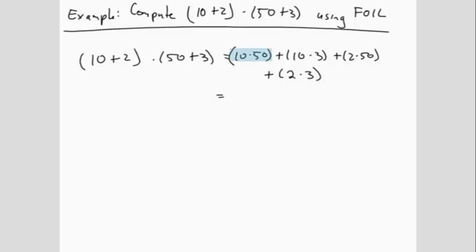10 times 50 is 500, plus 10 times 3 is 30, plus 2 times 50 is 100, plus 2 times 3 is 6. 500 plus 30 is 530, plus 100 is 630, plus 6 is 636.